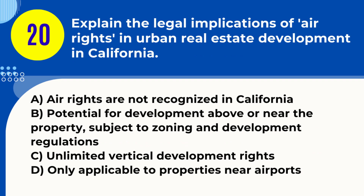Question 20. Explain the legal implications of air rights in urban real estate development in California. A. Air rights are not recognized in California. B. Potential for development above or near the property, subject to zoning and development regulations. C. Unlimited vertical development rights. D. Only applicable to properties near airports. Answer: B. Potential for development above or near the property, subject to zoning and development regulations. Explanation: In California, air rights pertain to the potential to develop space above a property, which is subject to local zoning and development regulations.